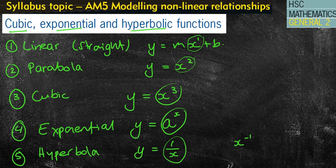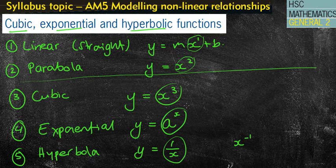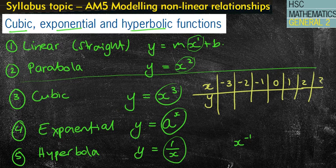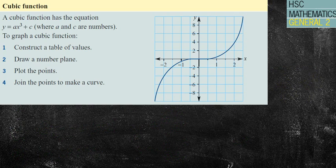With cubics, exponentials and hyperbolas, you pretty much just need to know what they look like and how to sketch one. The good thing is that whether you're doing a linear, parabola, cubic, exponential, or hyperbola, we always fall back to doing our table of values. You might use a few extra values — for example, going from minus 3 to positive 3 — if you're not sure what a cubic or exponential might look like.